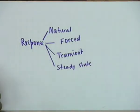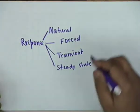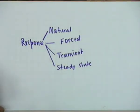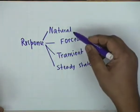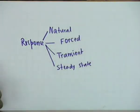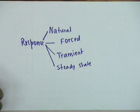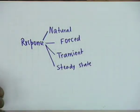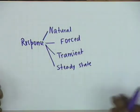So there are four kinds of responses: natural, forced, transient, and steady state. Sometimes natural response and transient response are wrongly identified with each other — they are not necessarily the same. Similarly, forced response and steady state response are also not necessarily the same.